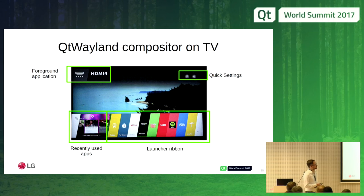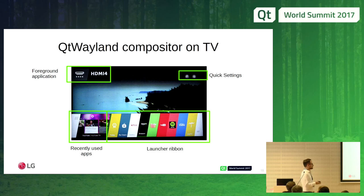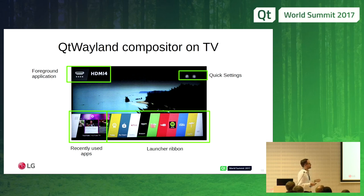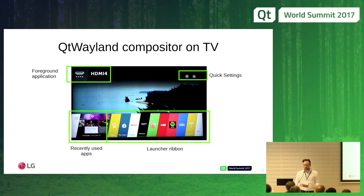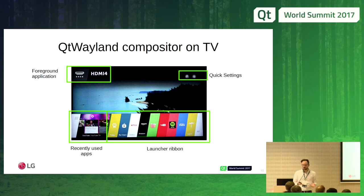On the TV, we have a launcher ribbon at the bottom — part of the compositor process. We have a recently used app shown as a snapshot (or live in theory), information about the foreground application, quick settings buttons, and the live application in the background. If that application is a live input like a tuner or HDMI, the compositor is transparent and the optimized hardware video plays directly.